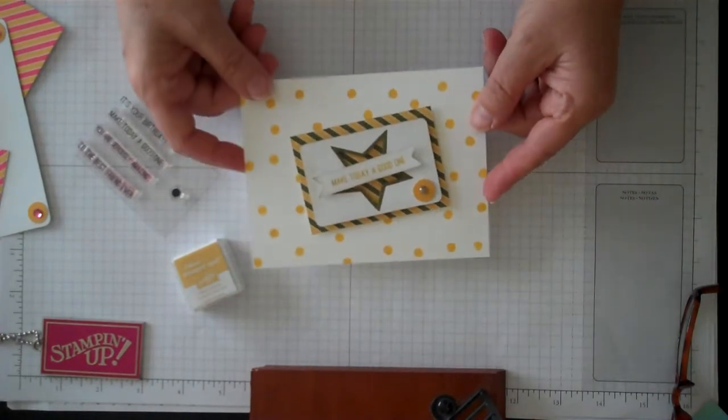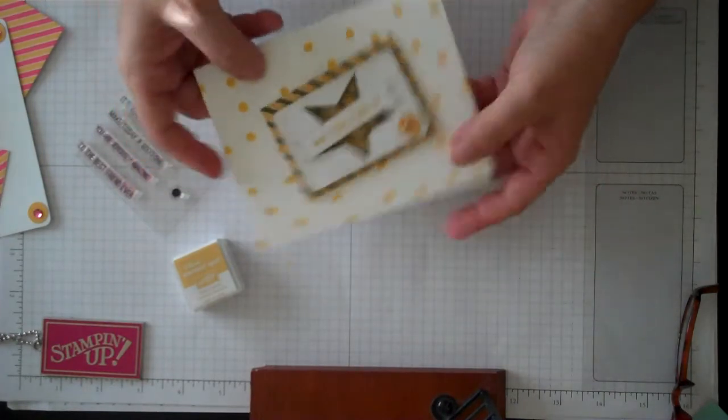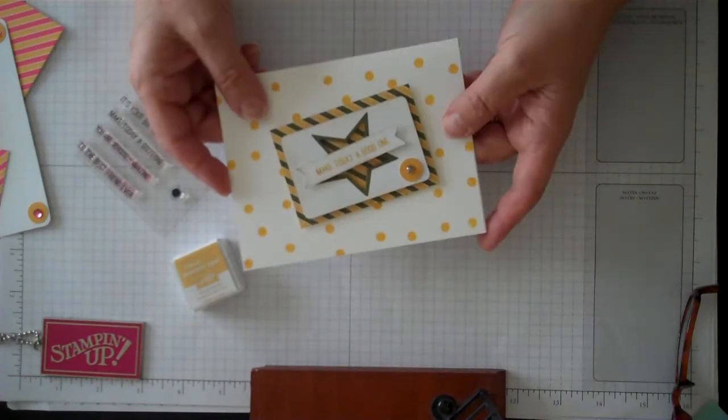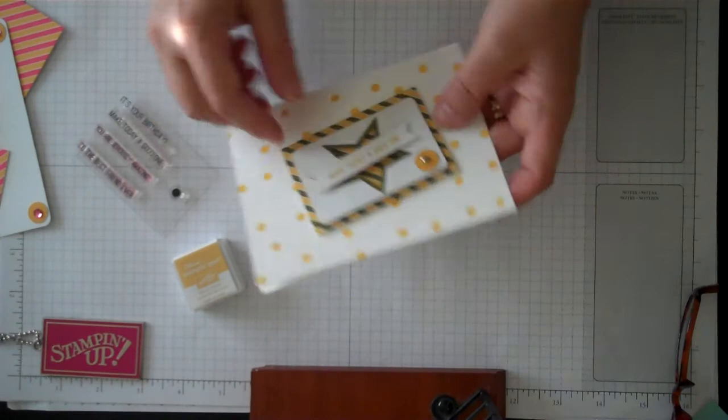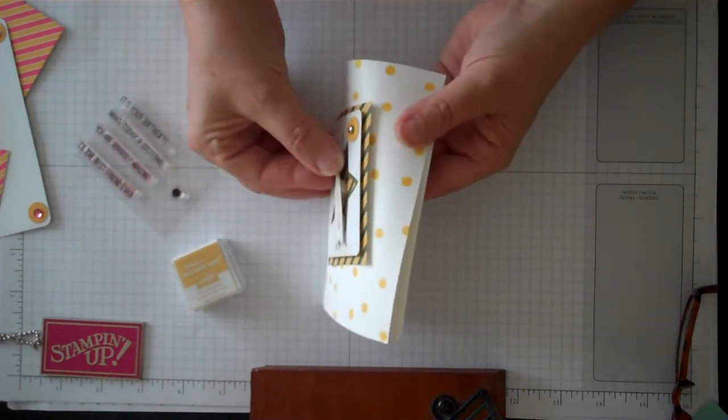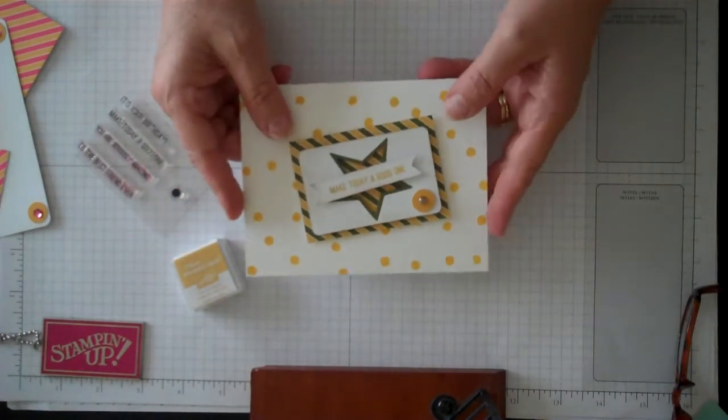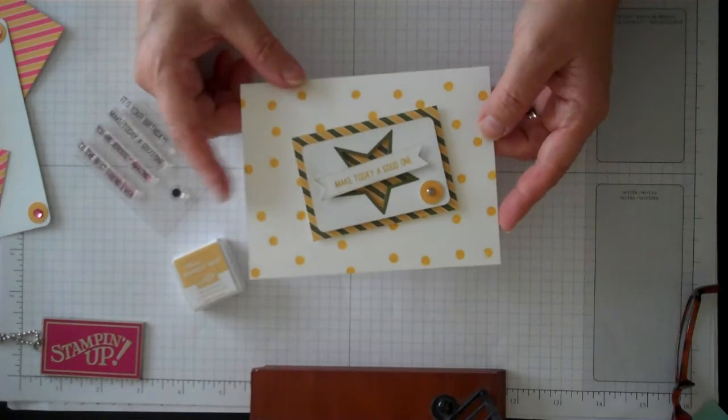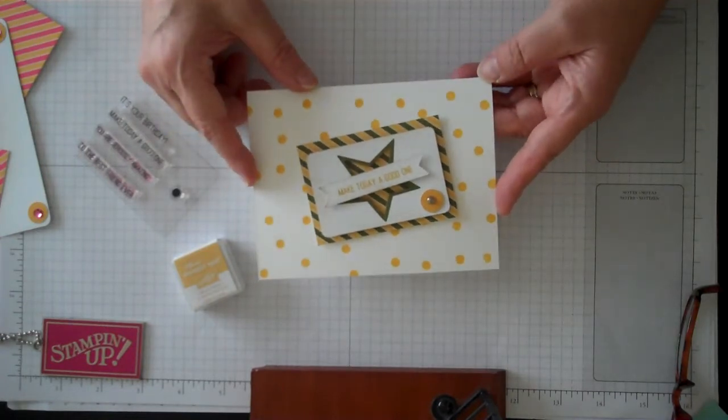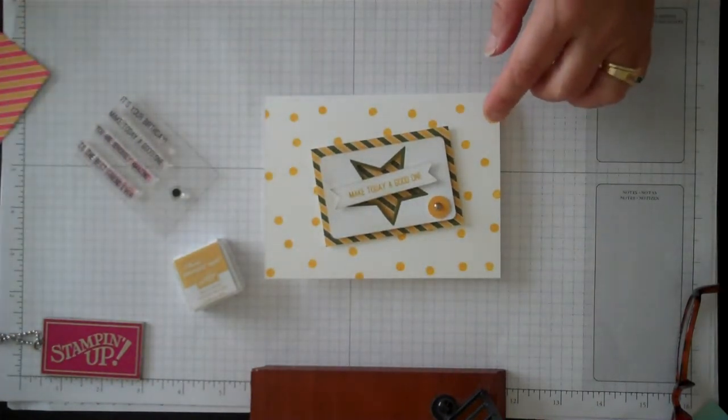Another tip is, if you're going to be mounting these on dimensionals and you want to also mount your little saying on dimensionals to make this height even, you're going to use two dimensionals for the center and then just one on each side so that it lays flat. That was a tip from somebody else online. There's a few YouTube videos on that, so that's a really cute idea.